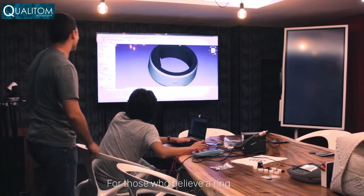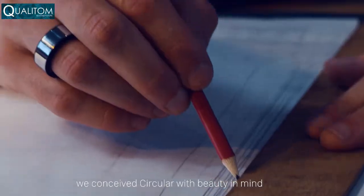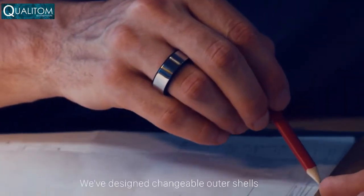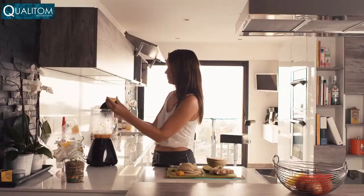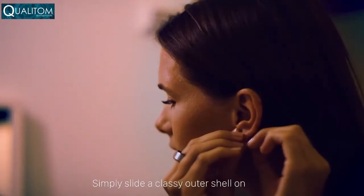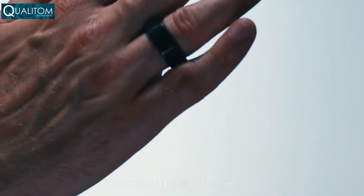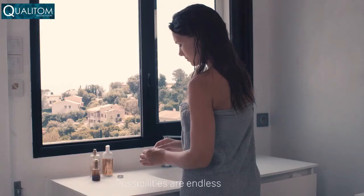For those who believe a ring should be first and foremost a fashion accessory, we conceived Circular with beauty in mind. We've designed changeable outer shells made of polished titanium to match every occasion. A fancy dinner? Simply slide a classy outer shell on. Going for a run? Choose the black fit outer shell. Possibilities are endless.